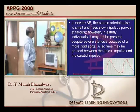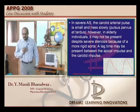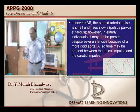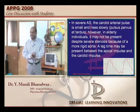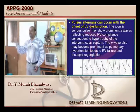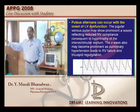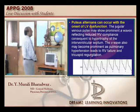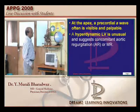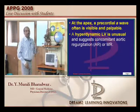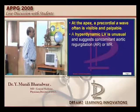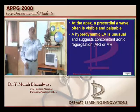Aortic stenosis places a load on the left ventricle. Once LV dysfunction occurs, there is a change in pulse called pulsus alternans - one beat strong, one beat weak, alternating. At the apex there is a precordial 'a' wave which is visible, and there is a systolic thrill felt in the aortic area at the right intercostal space, sometimes transmitted to the carotids.